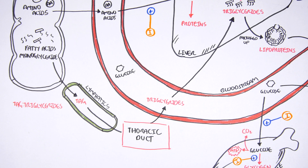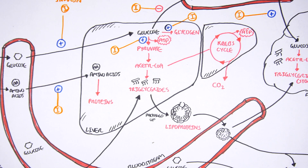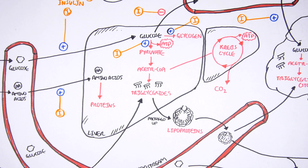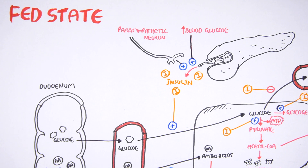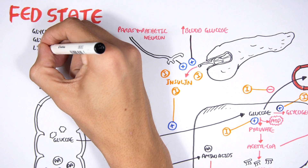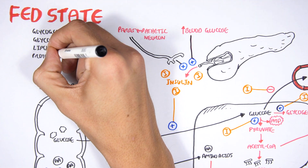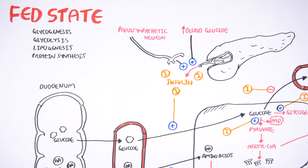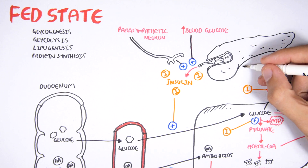The main takeaways from the fed state: the body absorbs glucose, amino acids, fatty acids, and monoglycerides, which are stored as glycogen, proteins, and triglycerides. The fed state is characterized by glycogenesis (production of glycogen), glycolysis, lipogenesis (production of triglycerides/lipids), and protein synthesis. The next video will cover the fasted and starved states.